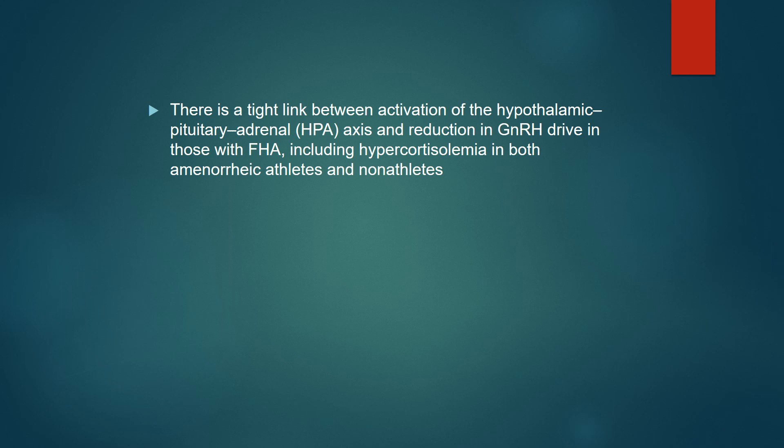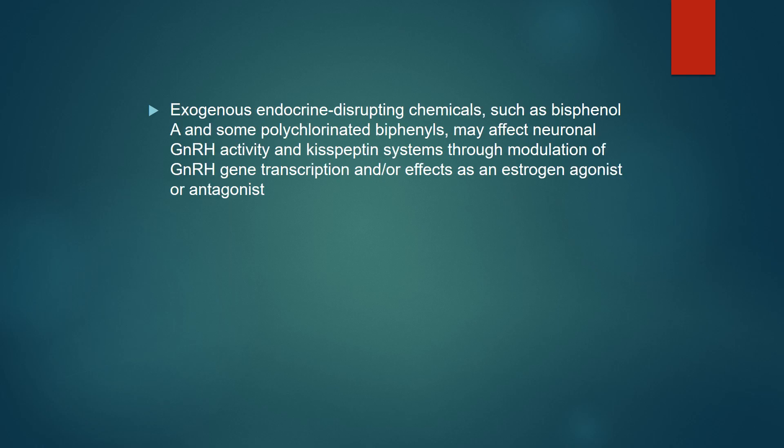There is a tight link between activation of the hypothalamic-pituitary-adrenal axis and reduction in GnRH drive in those with FHA, including hypercortisolemia in both amenorrheic athletes and non-athletes. Exogenous endocrine disrupting chemicals such as bisphenol A and some polychlorinated biphenyls may affect neuronal GnRH activity and the kisspeptin system through modulation of GnRH gene transcription and the effects of estrogen agonist and antagonist.